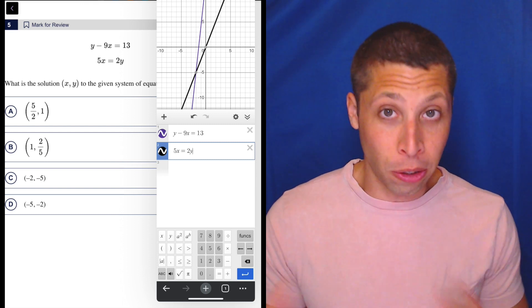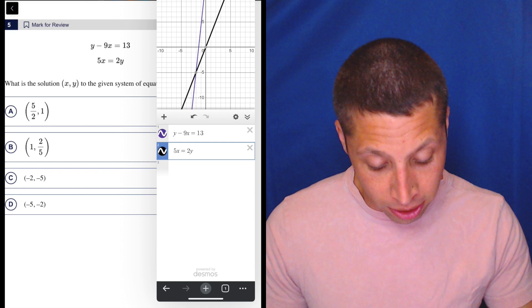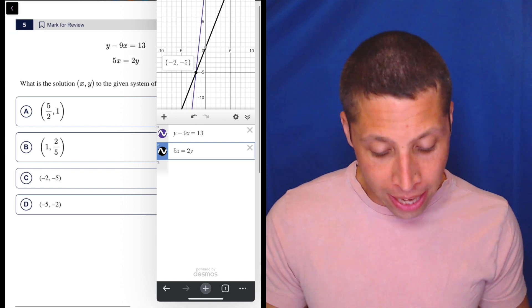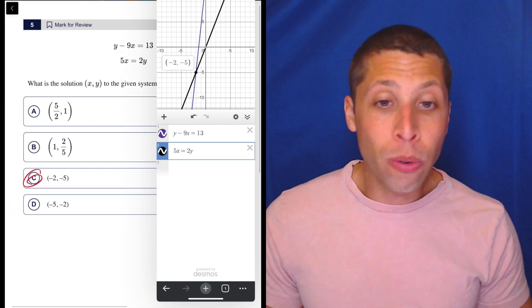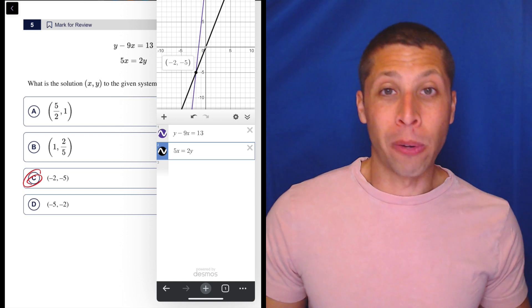But what do they want? They want the solution. The solution is the point of intersection. It's right there staring at me in the face. Negative two, negative five. No doubt. No chance for error, right?